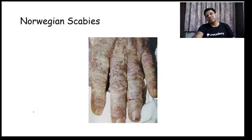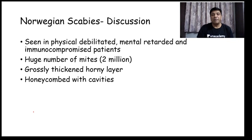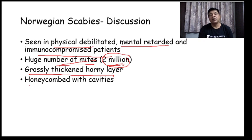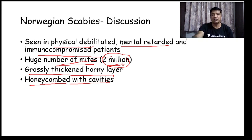Norwegian scabies is seen in physically debilitated, mentally retarded, and immunocompromised patients. The number of mites may be around 2 million in crusted or Norwegian scabies. The cornified cell envelope will be grossly thickened and honeycombed with cavities of sarcoptic scabies. The surface of the stratum corneum will be honeycombed with these cavities.